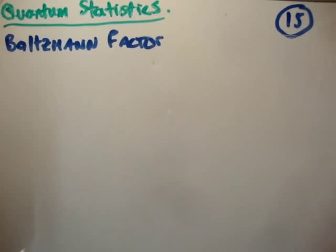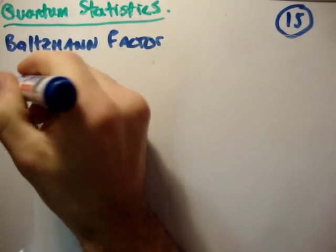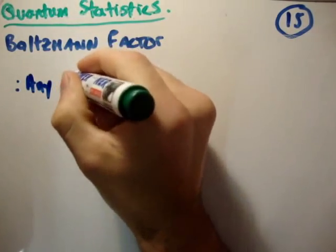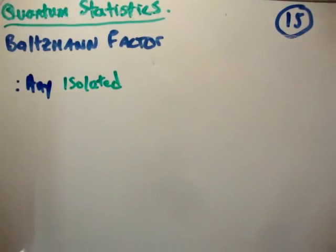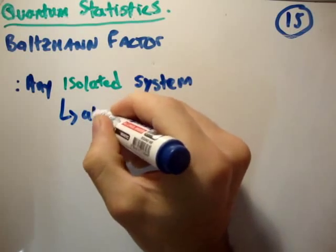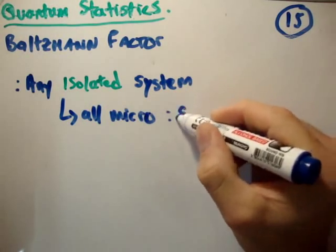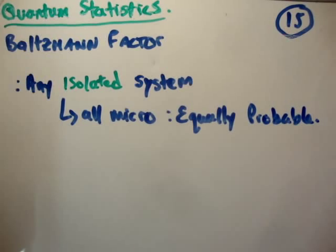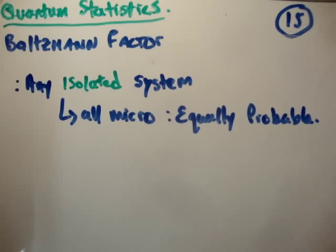The first thing is we need to look at the fundamental assumption of statistical mechanics, and that says that in any isolated system, all microstates are equally probable. Now the issue here is we need to come up with an isolated system. A single atom is not an isolated system, because a single atom is inside some sort of other system — it's inside what we might call a reservoir.